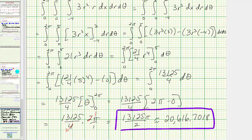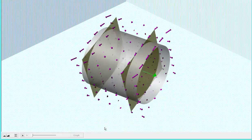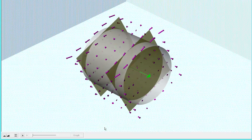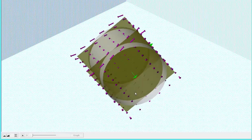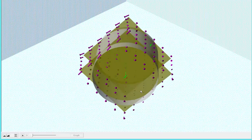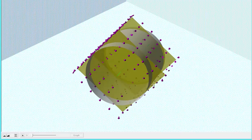So going back to the graph, this value represents the total flow across the boundary surface S, as well as the total divergence of the vector field in the solid region V. I hope you found this helpful.